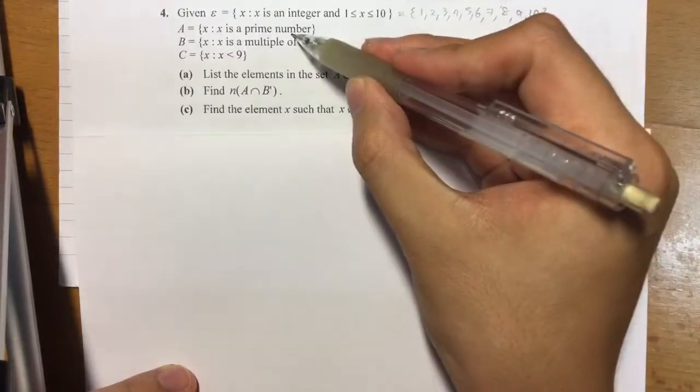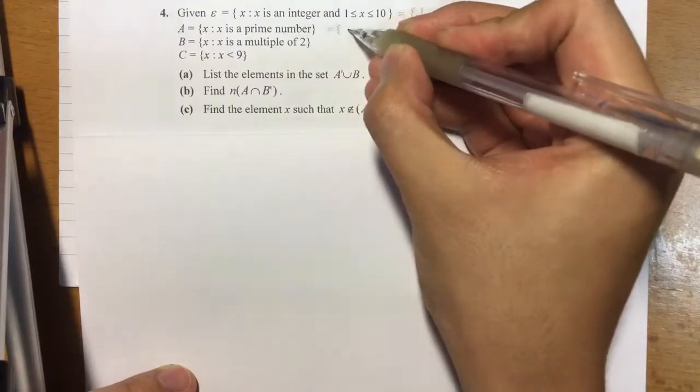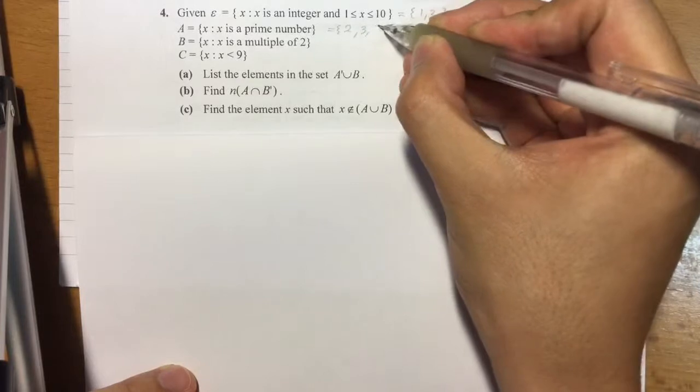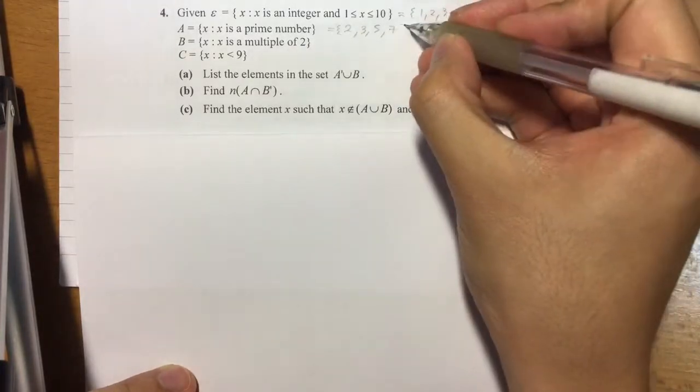Next, A: x is a prime number but it still has to fall within our universal set. So we have numbers such as 2, the smallest prime number, 3, 5, 7. Any more? No, so that's it.